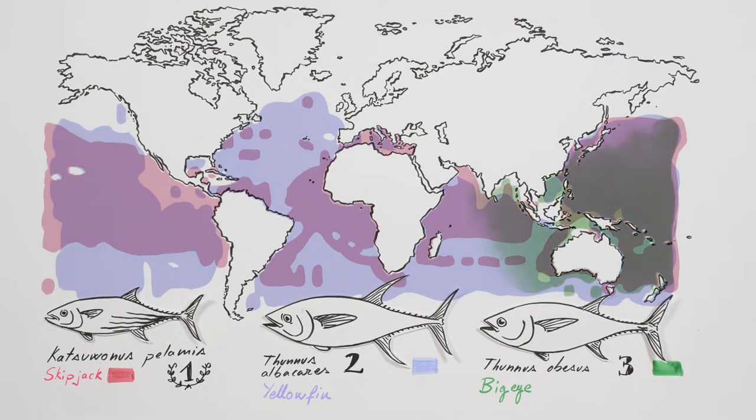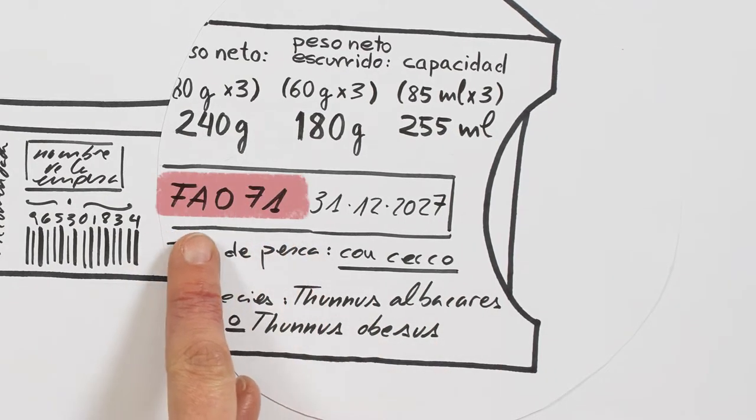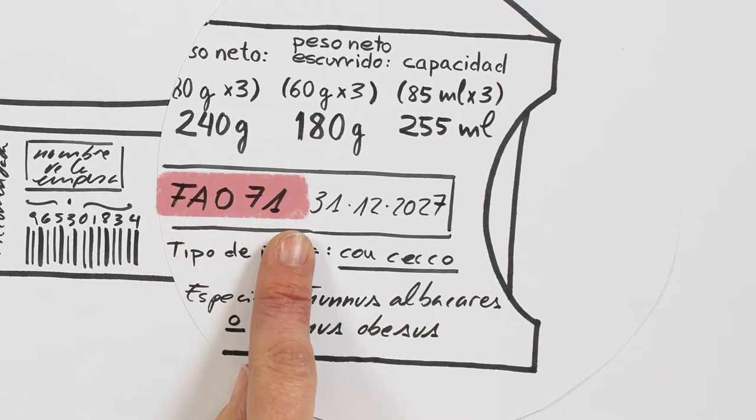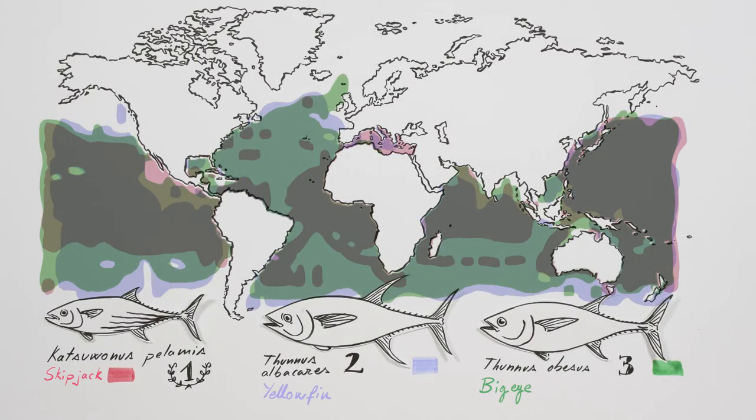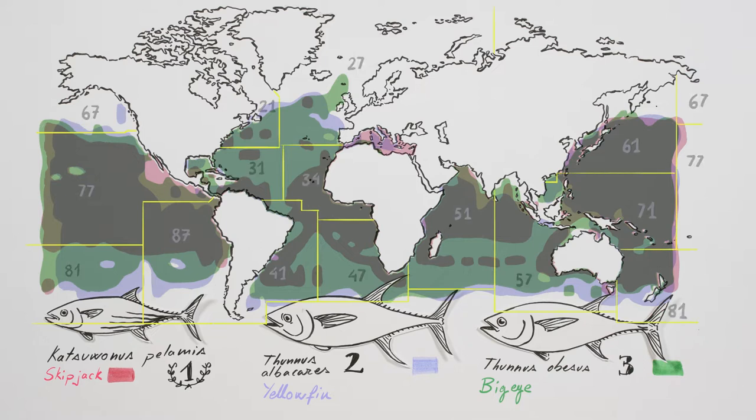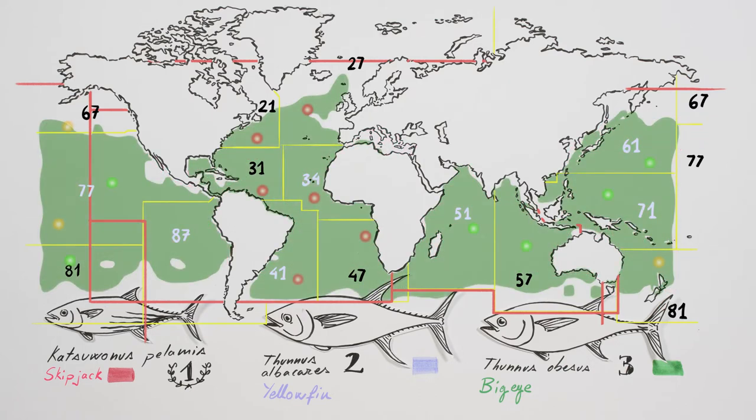Even so, populations are constantly being evaluated to avoid overfishing. And how is that done? The label includes an FAO area and a number. It refers to zones that the UN has established in the oceans to provide better control of our fishing resources. So, if we know where the tuna was fished, and to that we add information provided by various international organizations, we can find out whether the tuna did or didn't come from a place that's overfished.